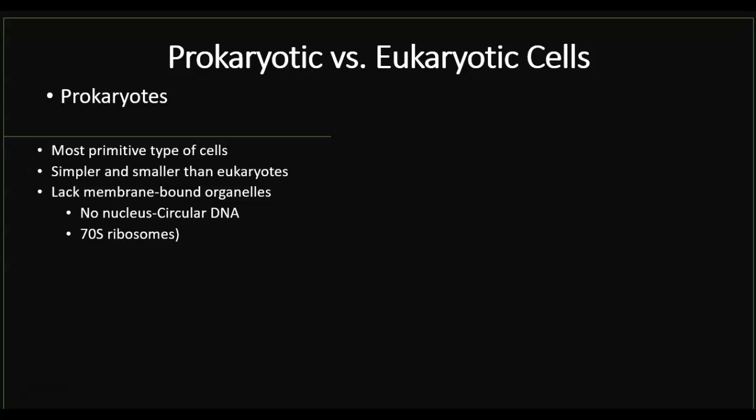Prokaryotes lack membrane-bound organelles, and this includes the nucleus, but also other organelles such as the mitochondria, the rough ER, the smooth ER, and the Golgi. All those organelles that you would see in a typical eukaryotic cell are missing in prokaryotes.